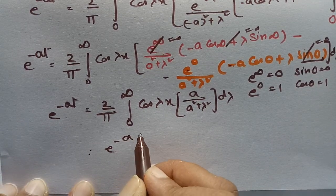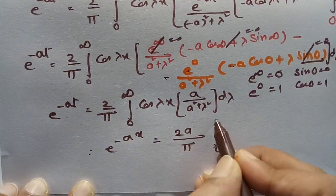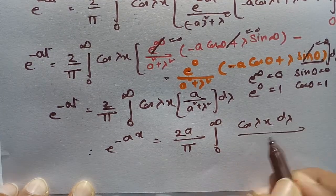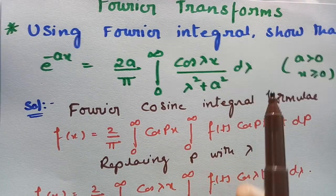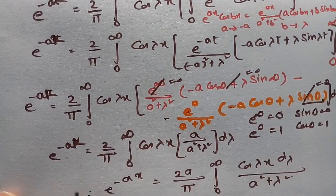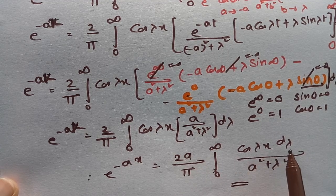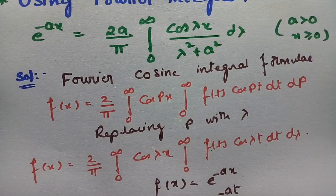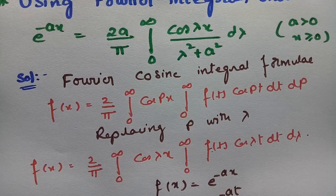Therefore e^(−ax) can be written as — bringing a outside — (2a/π) times the integral from 0 to infinity of cos(λx) dλ / (a² + λ²). This is what was asked, and f(x) here corresponds to x. There was a small mistake noted earlier, but the final result is: e^(−ax) = (2a/π) ∫₀^∞ cos(λx) dλ / (a² + λ²). I hope you are confident to solve this problem. Practice well, share with your friends, subscribe to this channel, and thank you for staying all through my journey.